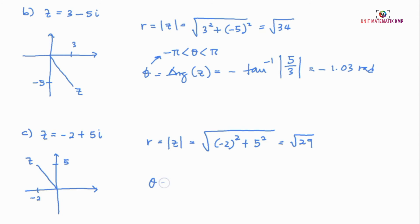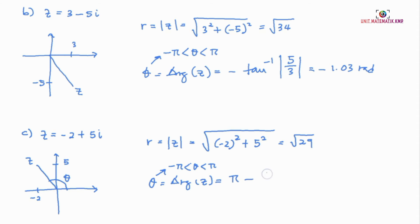To find the argument, we look at the Argand diagram and see that Z is in the second quadrant. Since the argument interval is from negative pi to pi, the formula for the second quadrant is pi minus tangent inverse of 5 over 2. Calculating the tangent inverse gives 1.19 radians, and the final answer is 1.95 radians.